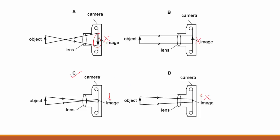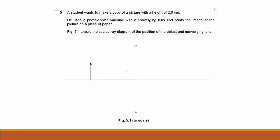This particular question says that a student made a copy of a picture with a height of 2 centimeters. He uses a photocopier machine and prints the image on a piece of paper. Take note that this is a scale diagram - it is to scale, so essentially you have to draw something on it.